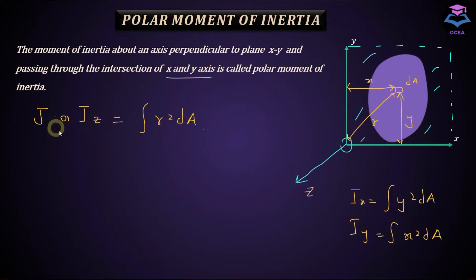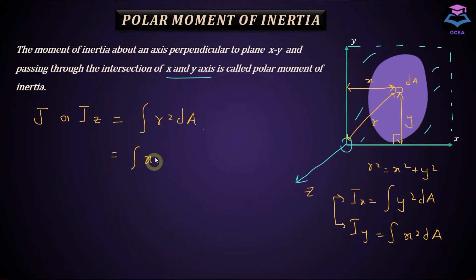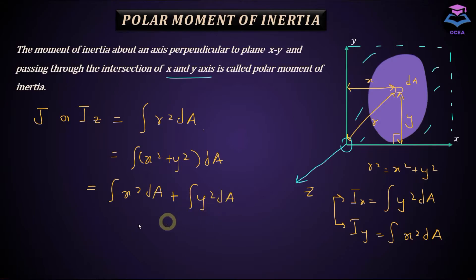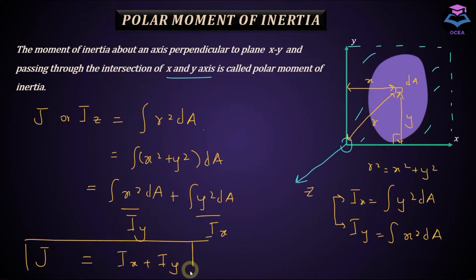To find the relation between polar moment of inertia and the two planar moment of inertias: using the Pythagorean theorem on the right-angle triangle formed, R² = X² + Y². Substituting into the integral, J = integral of (X² + Y²)·DA = integral of Y²·DA + integral of X²·DA, which equals IX + IY. So if you know the moment of inertia about the X axis and Y axis, simply add them to get the polar moment of inertia.